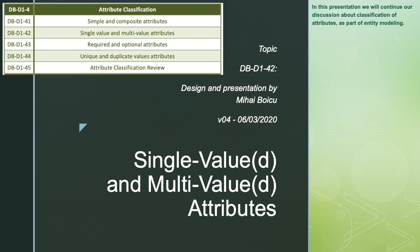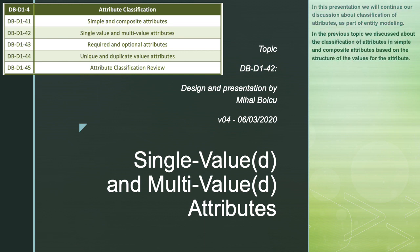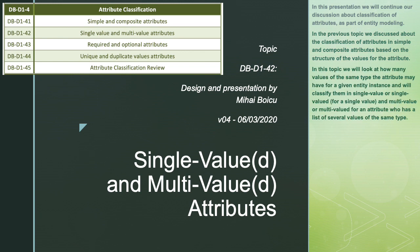In this presentation we will continue our discussion about classification of attributes as part of entity modeling. In the previous topic we discussed the classification of attributes into simple and composite attributes based on the structure of the values. In this topic we will look at how many values of the same type an attribute may have for a given entity instance, and classify them as single-valued or multi-valued.